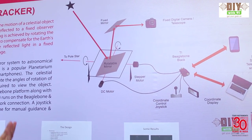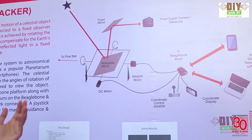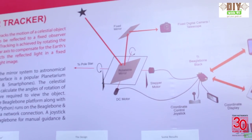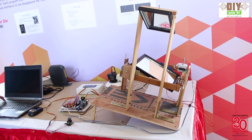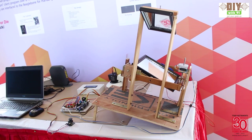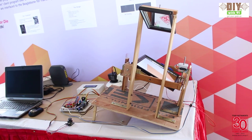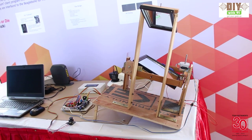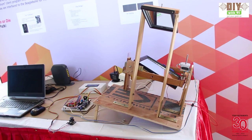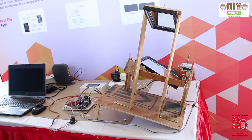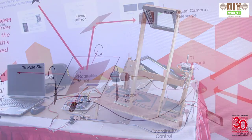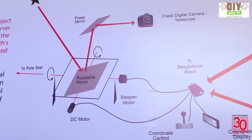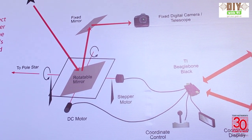The rotation is done by two motors. A stepper motor controls the rotation from east to west, which moves at a very, very slow rate, and the DC motor controls the rotation along the perpendicular axis. The mirror is mounted on an equatorial mount so that the stepper motor can counteract the relative motion of the earth.